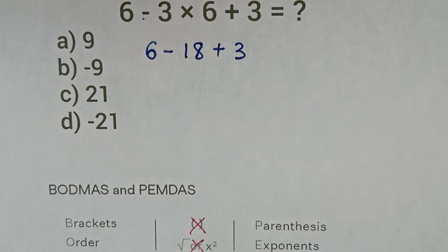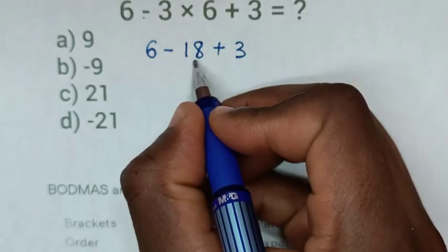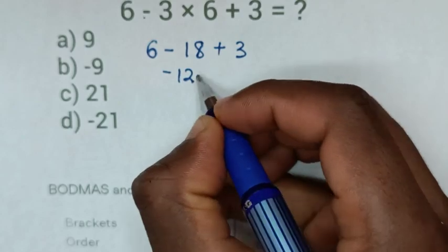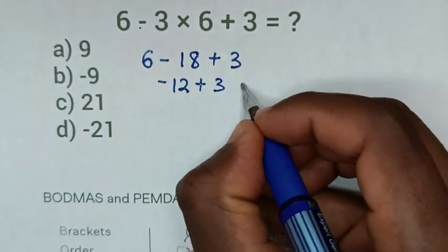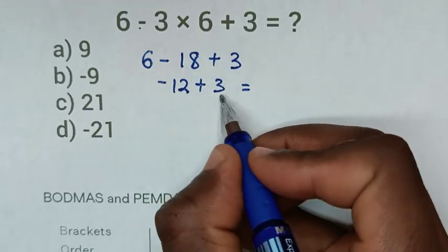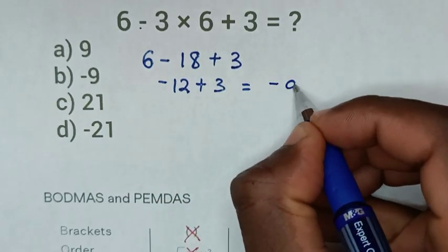So, it will be 6 minus 18 is negative 12, then plus this 3. So, it will be equal to negative 12 plus 3 is negative 9.